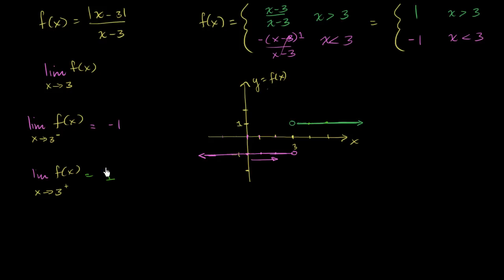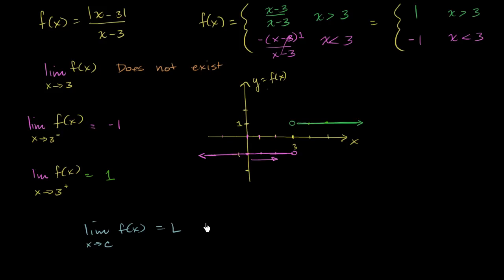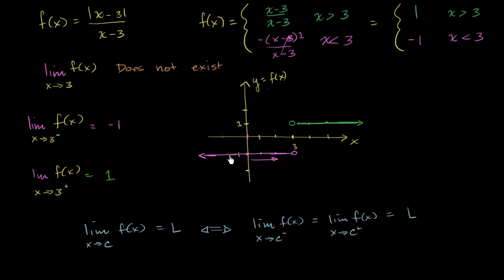Since we're approaching two different values, the limit does not exist. More formally, the limit of f of x as x approaches some value c equals L if and only if the limit from the negative direction equals the limit from the positive direction, both equal to L. That did not happen here — the limit from the left was negative 1 and the limit from the right was positive 1. Since we did not get the same limits from either side, the limit does not exist in this case.